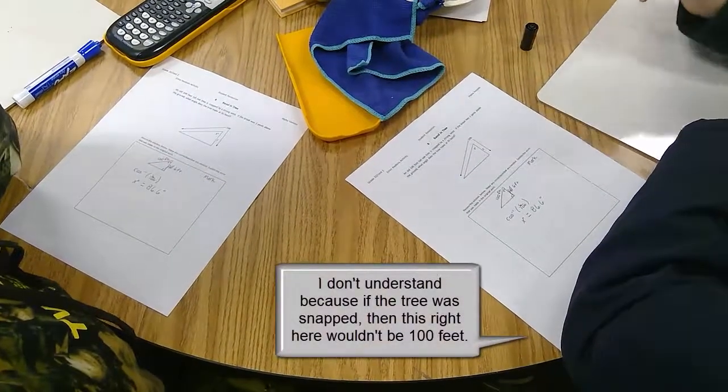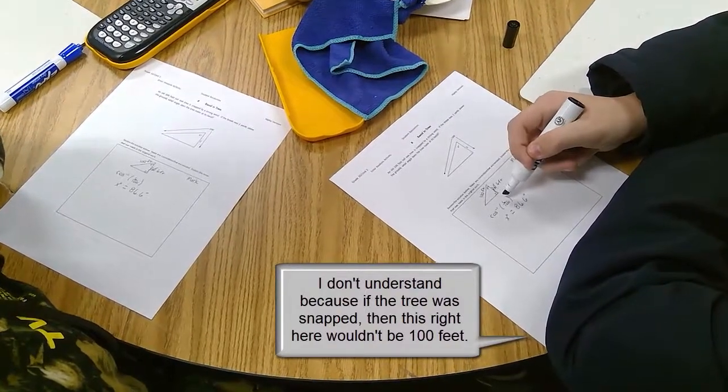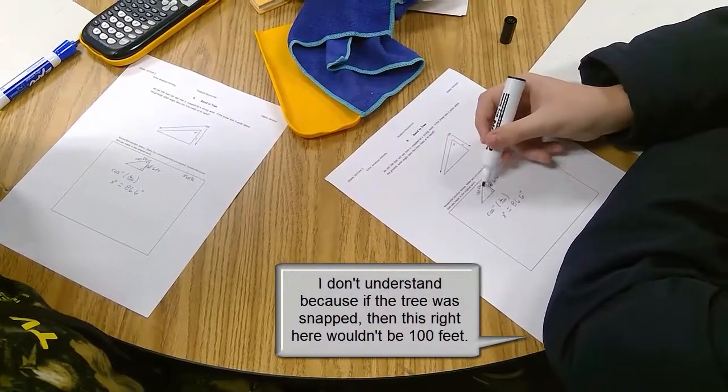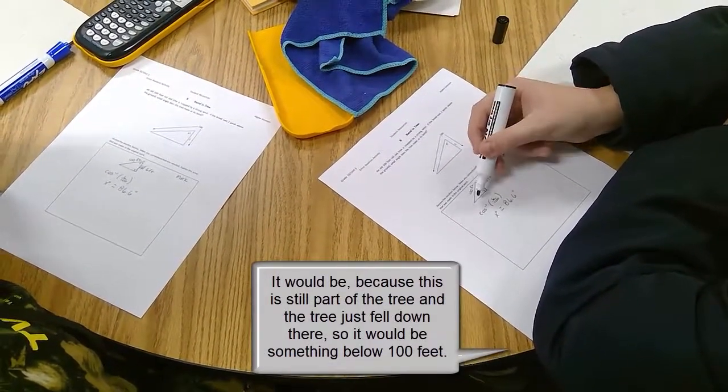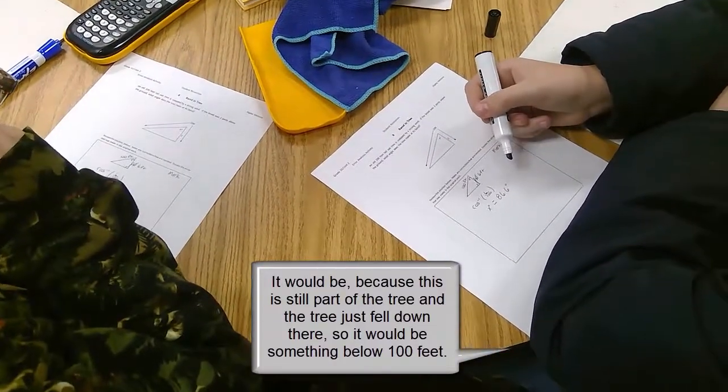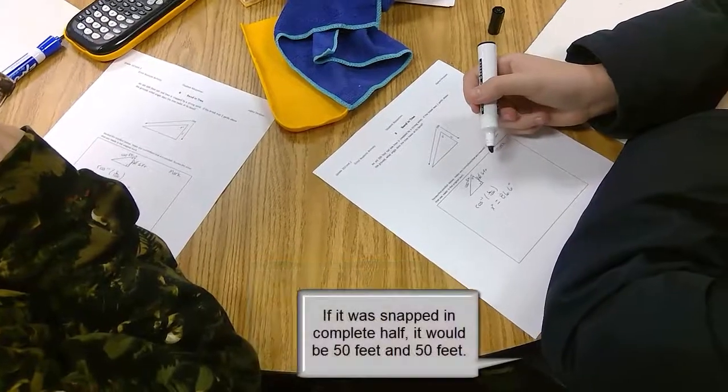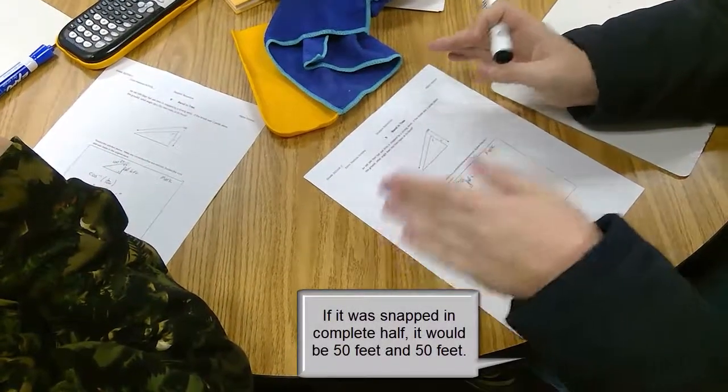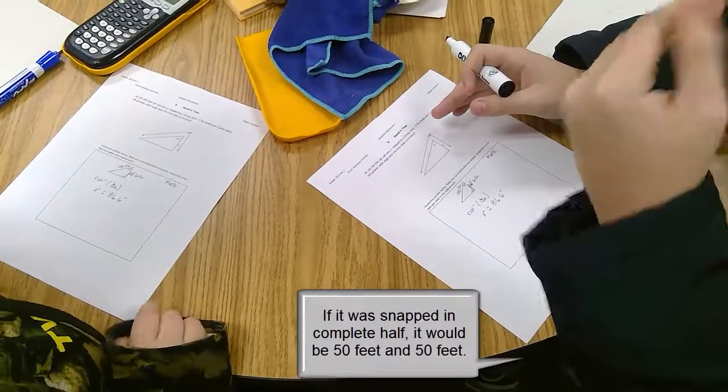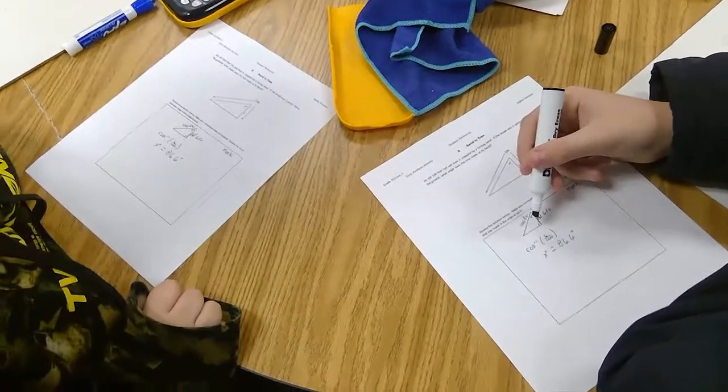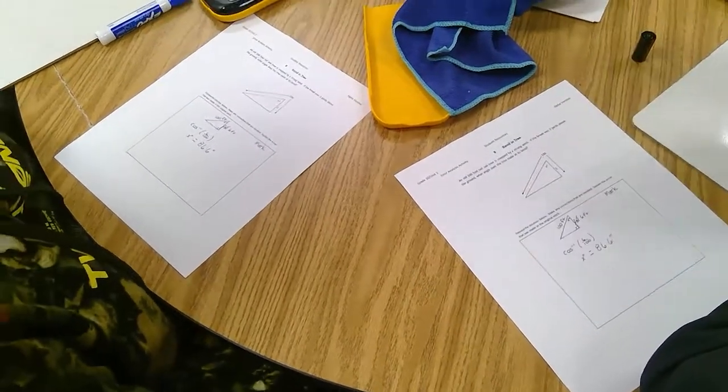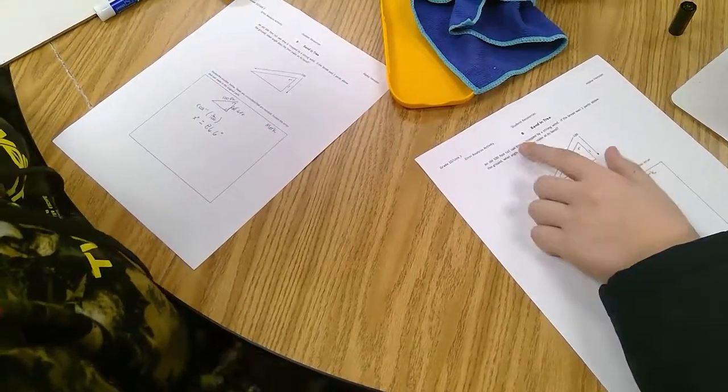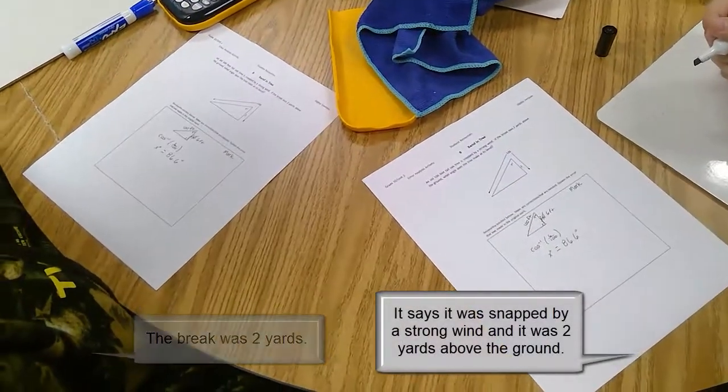I don't understand, though, because if the tree was snapped, then this right here would be 100 feet. It'd be something below 100, if it was snapped. Because this is still part of the tree, that just fell down there. It'd be something below 100. Does it tell you something that corroborates what he said? Does it tell you anything about a break? Oh yeah, it says it snapped by a strong wind, and it was two yards above the ground.